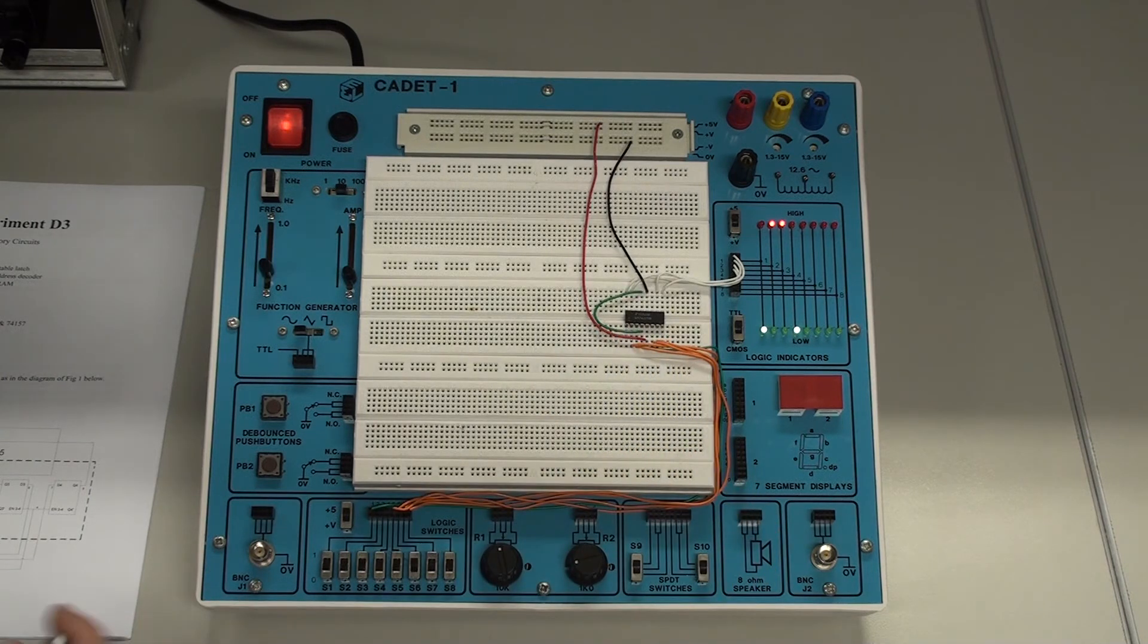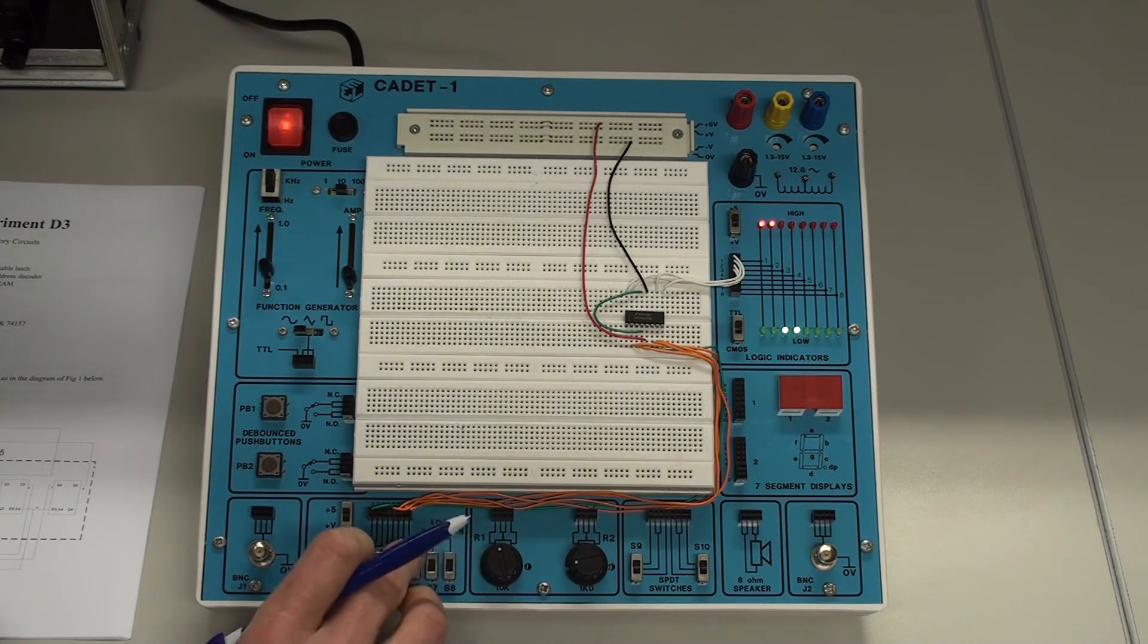So if I want to write, say, another number into the latch, I set the enable again to high. And that's a write. So it's now set for the write condition. And this time we'll say we'll put eight and two is ten.